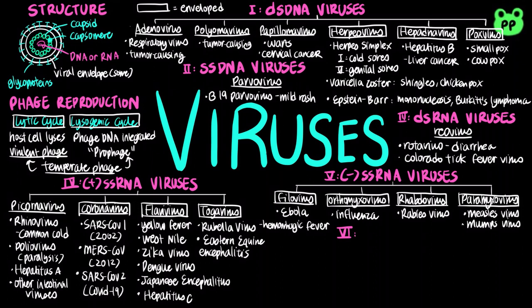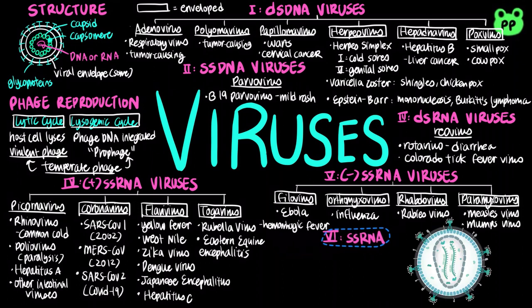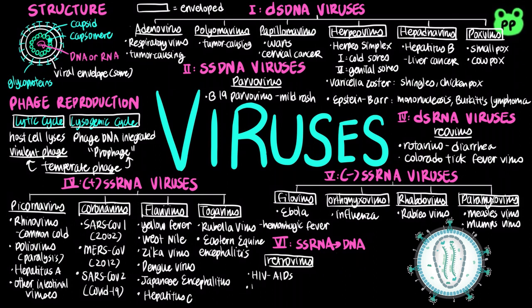The last type of viruses contain single-stranded RNA that uses reverse transcriptase to copy their RNA genome into DNA, including HIV, or human immunodeficiency virus, which causes AIDS, or acquired immunodeficiency syndrome, by targeting the helper T cells, as well as RNA tumor viruses, which cause leukemia.